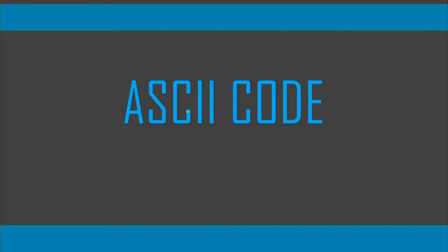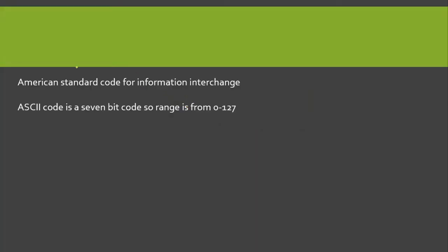In this video we are going to discuss the ASCII code. ASCII stands for American Standard Code for Information Interchange. ASCII code is a 7-bit code, so it ranges from 0 to 127. By 7-bit I mean that we have 7 bits, and the highest value is going to be 7 ones, which equals 127.